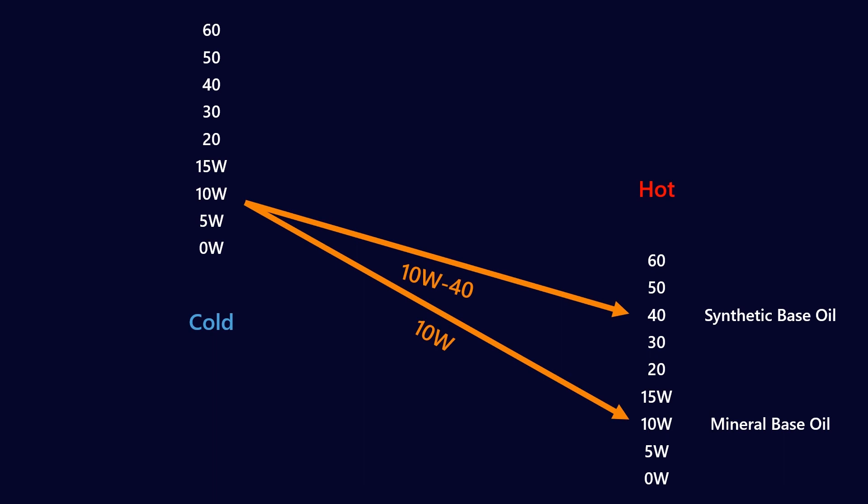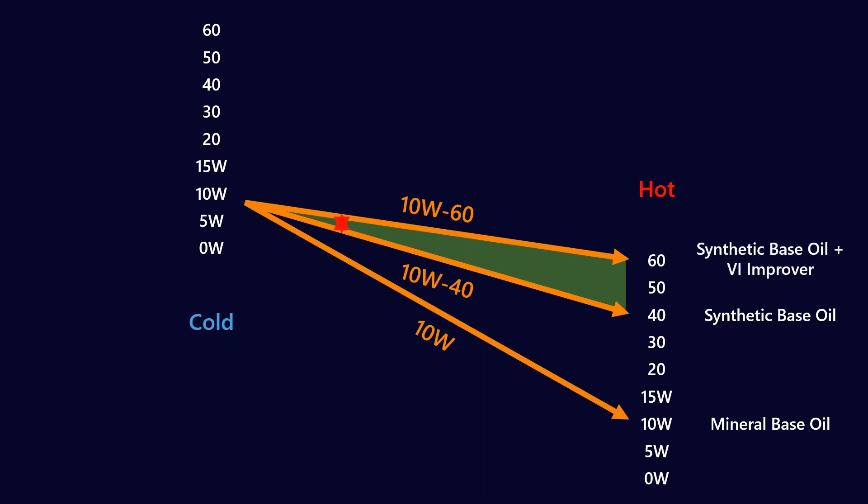How does that now look? Imagine if we took our 10W40 synthetic base oil and we added viscosity improver additives to it. Now we might be able to achieve a 10W60. The difference between the 10W40 and the 10W60 is made up by the VI improvers. You see the contribution at low temperatures is very small, but as we heat up, the molecules expand and their contribution increases. That's why the difference gets larger and larger as you get to hot temperatures.